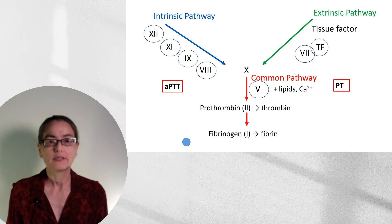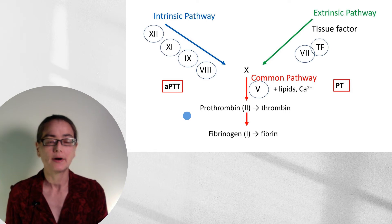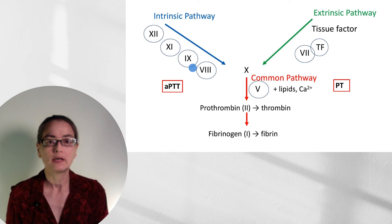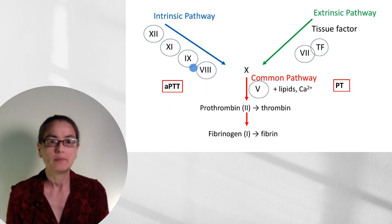I personally don't think it's important to memorize all the intricacies of the different names of these factors, because in addition to numbers they all have additional names — it depends on your curriculum. There are some amazing videos out there with mnemonics for learning the different parts of these pathways. This schematic shows it simply: the intrinsic pathway — where we add glass beads — has factors 12, 11, 9, and 8, coming to 10. The common pathway has cofactor V, taking us to prothrombin (factor II), then to fibrinogen. The extrinsic pathway involves tissue factor and factor VII. Intrinsic pathway corresponds to APTT; extrinsic pathway corresponds to PT.